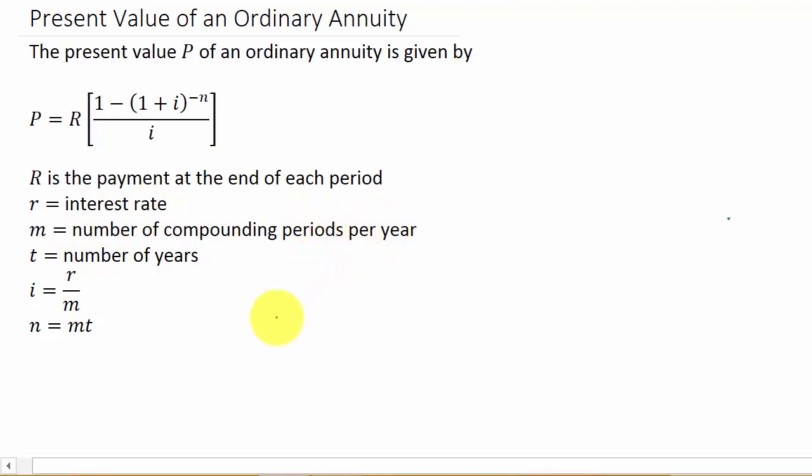So in other words, if it's compounded annually, M would be 1. Semiannually, M would be 2. Quarterly, M would be 4. Monthly, M would be 12. And daily, M would be 365.